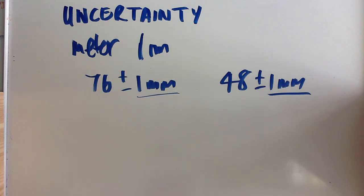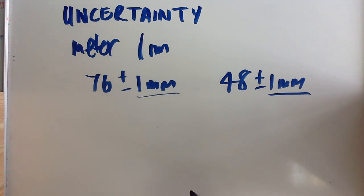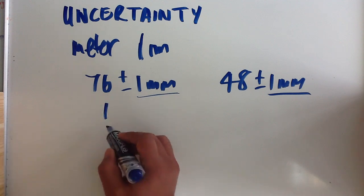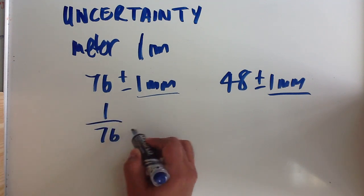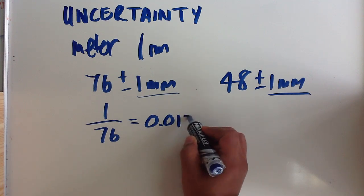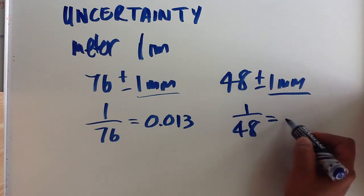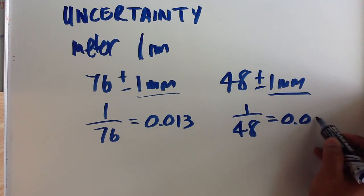In order to get the relative uncertainty, we need to take that absolute uncertainty and divide it by your measurement. So in this case, we've got 1 divided by 76, that gives us 0.013, and 1 divided by 48 gives us 0.021.